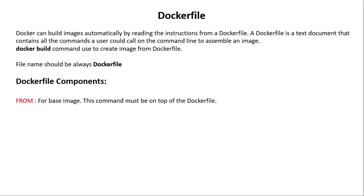FROM is used for the base image and this command must be at the top of the Dockerfile. RUN is used to execute commands and it creates a layer in the image. To run any command, we use the RUN keyword — for example, to update your system you would write: RUN apt-get update -y.